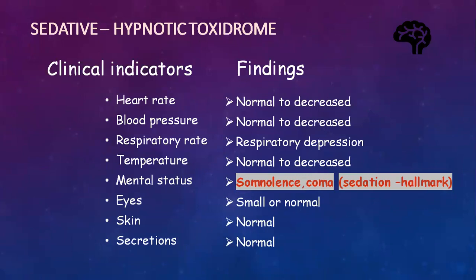Coming to sedative-hypnotic toxidrome — the hallmark finding here is sedation. This is a very notable point because everything else will be normal to decreased. The patient will present with somnolence and may go into a coma, and may also have respiratory depression. Heart rate will be normal to decreased, blood pressure normal to decreased, temperature normal to decreased, pupil small to normal, and skin and secretions are all normal.